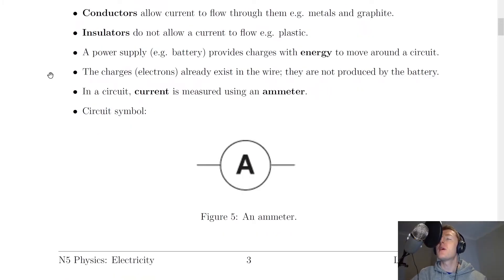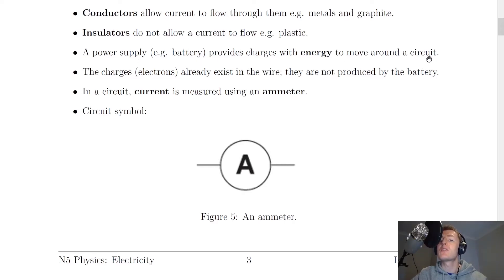Why do we need a power supply or a battery in a circuit? A power supply, for example a battery, provides the charges with energy to move around the circuit. So if it wasn't for the battery, the electrons wouldn't actually go anywhere.